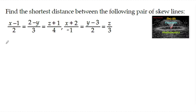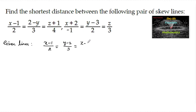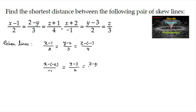The given lines can be rewritten in standard symmetric form. The first line: (x−1)/2 = (y−2)/(−3) = (z−(−1))/4, and the second line: (x−(−2))/(−1) = (y−3)/2 = (z−0)/3.